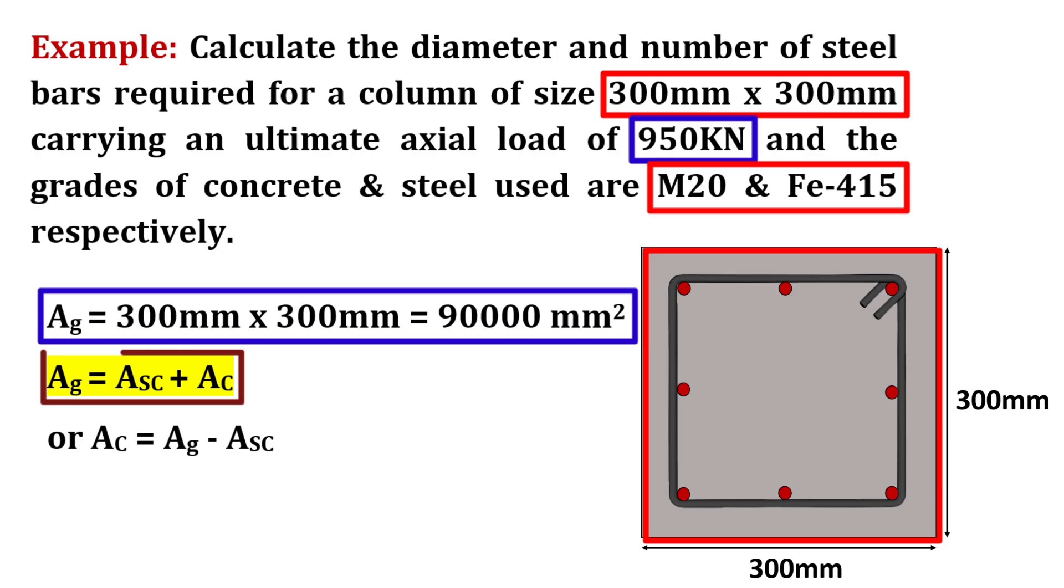As we know, Ag is equal to Asc plus Ac, where Asc is the area of steel and Ac is the area of concrete. Or we can simply write it as Ac equal to Ag minus Asc.